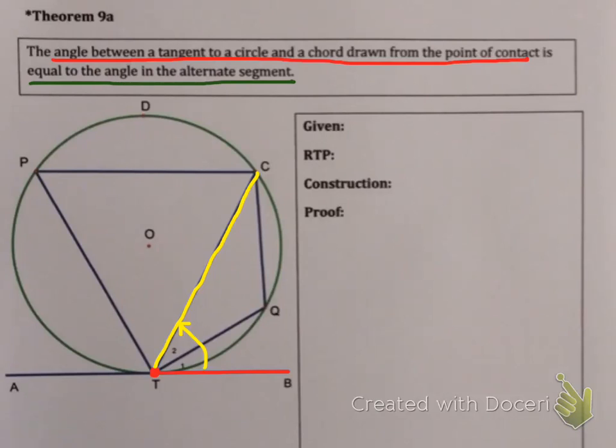Now apparently this theorem says this angle will be equal to the angle in the alternate segment. Now what does that mean? Alternate means on the other side, on the opposite side. And segment means part of the circle. So which angle are they talking about here?